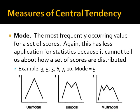The mode is the most frequently occurring value for a set of scores. This has less application for statistics because it cannot tell us how a set of scores is distributed. In our data set of 3, 5, 5, 6, 7, and 10, the mode is 5 because it occurs twice, whereas none of the other numbers occur more than once. This would be a unimodal distribution. There are also bimodal and multimodal distributions, which occur when multiple numbers appear at the same frequency.